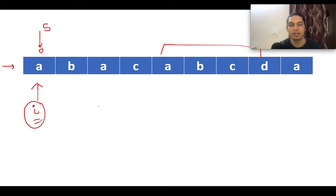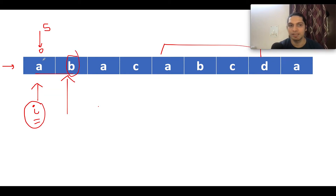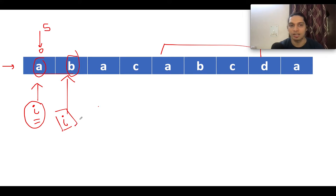What I'm going to do is compare i+1 with i. What character do we have at i+1? We have 'b'. Is it contiguous with respect to the character at i? Yes, it is contiguous — here we have 'b' and here we have 'a'. As a result, we increment the i pointer. Let's proceed and do the same thing again: compare i+1 with i. The i+1 character is 'a'. Is it contiguous with respect to i? No, it is not contiguous.